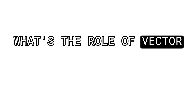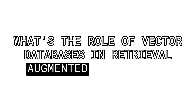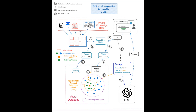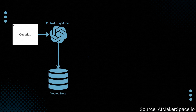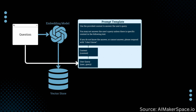What's the role of vector databases in retrieval augmented generation? In a typical RAG workflow, the external data that we're using to augment the LLM's knowledge is first converted into vector embeddings. The vector embeddings are then stored in a vector database. Then when a user submits a query, the RAG system follows these steps: the query is converted into a vector embedding using the same embedding models used to embed our documents.